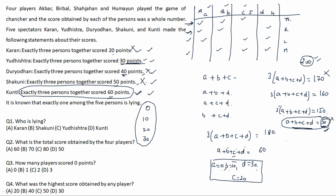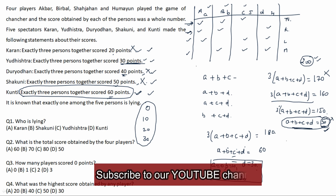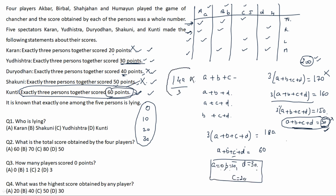Only one valid case remains. The four different scores are 0, 10, 20, and 30. Karan is lying because he said exactly 3 persons scored 20 points, which is not true. The total score obtained by all four players is 30+20+10+0 equals 60. The number of players who scored 0 points is exactly 1. The highest score obtained by any player is 30.